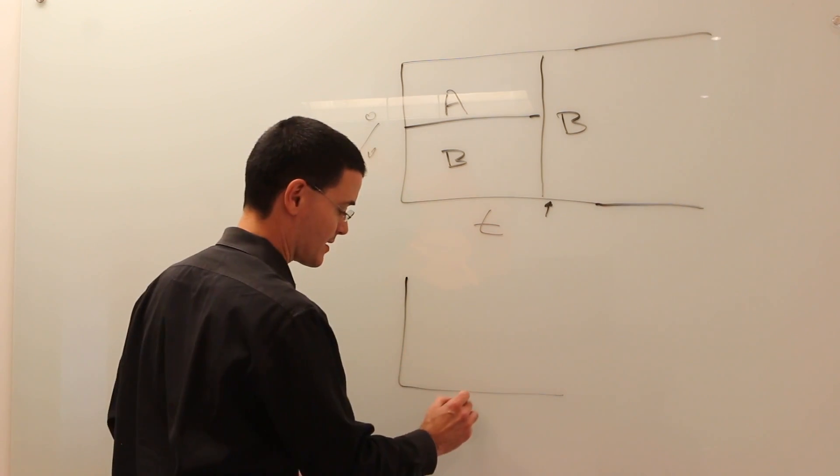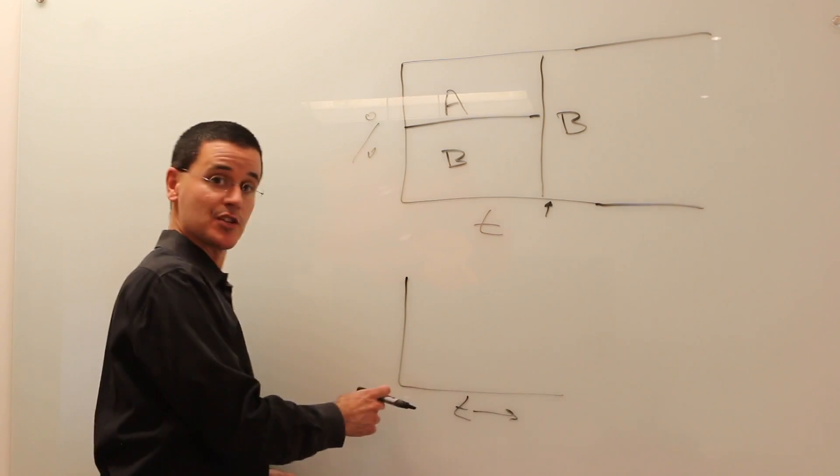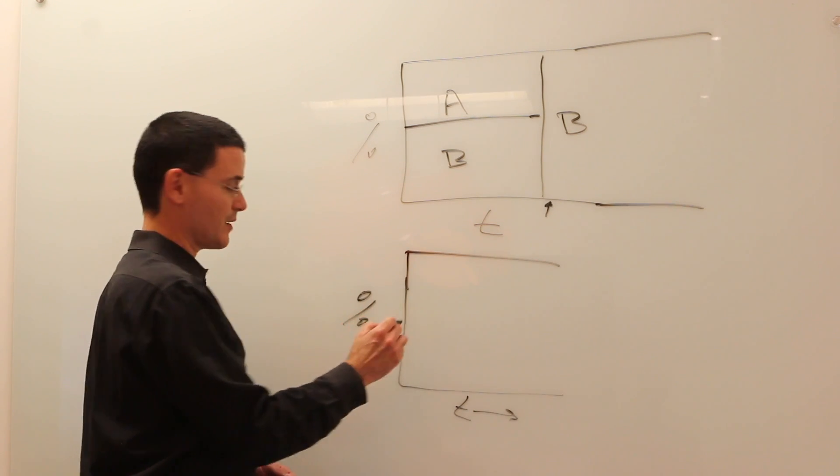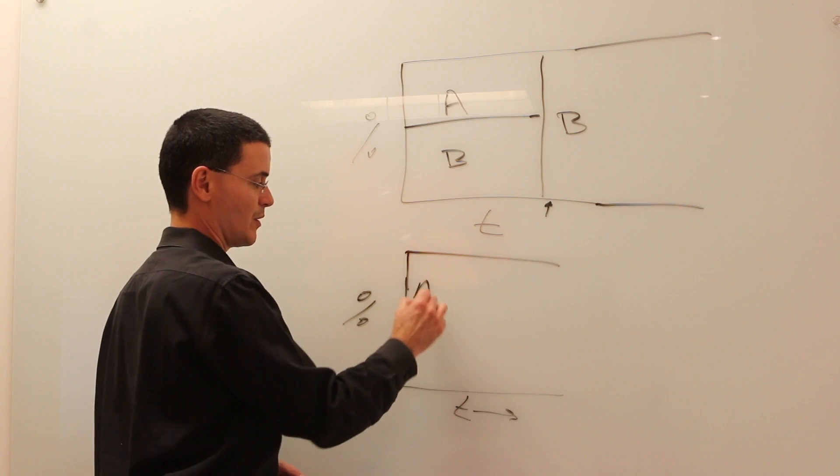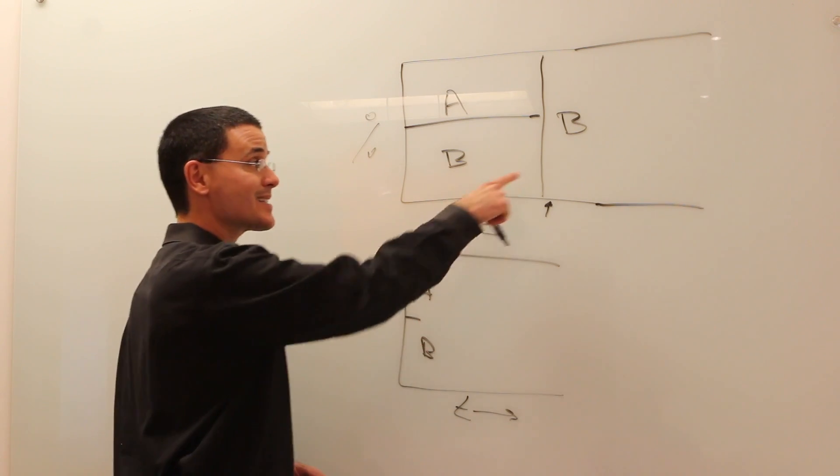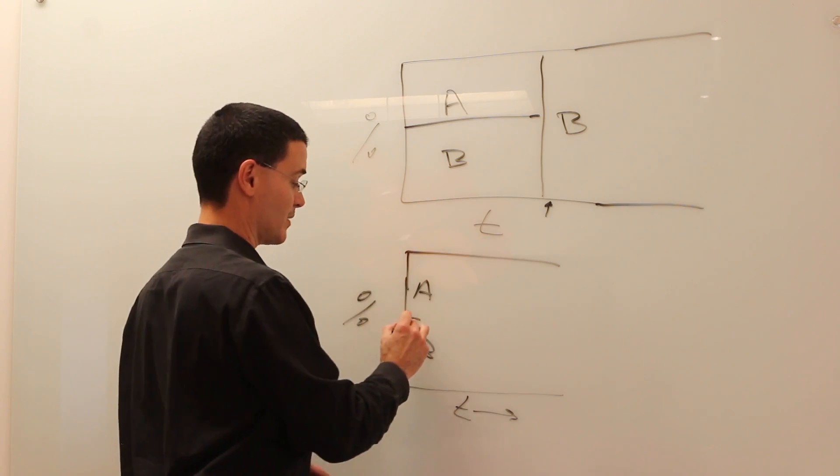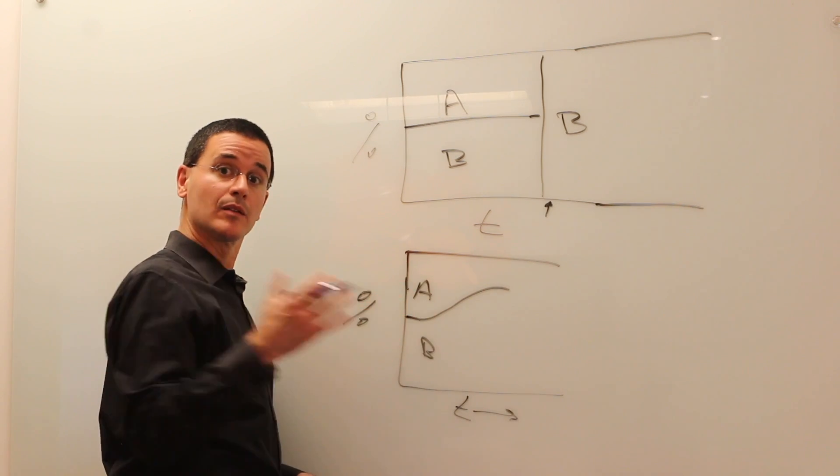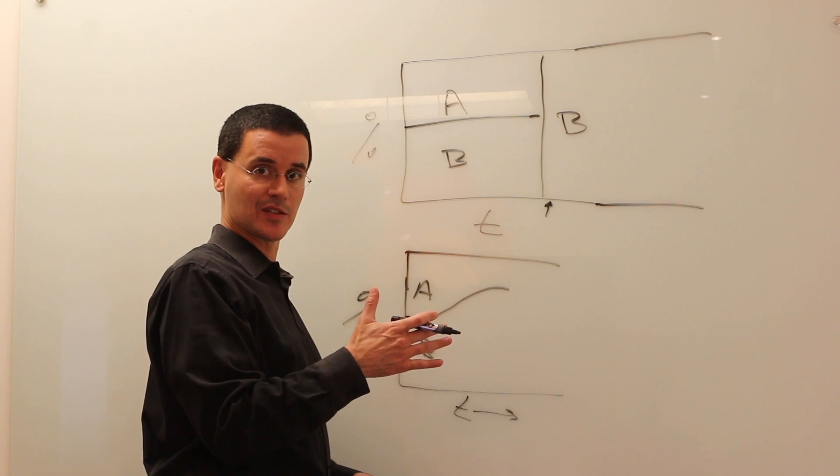If I run the same test in a predictive personalization system, here's time. Here's the percent of traffic. We'll start with 50-50 for A and B, but as the system sees that B is performing better, it'll start allocating more traffic to B long before you would have reached statistical significance.